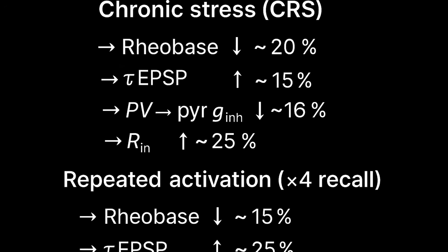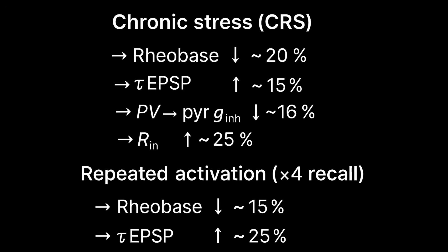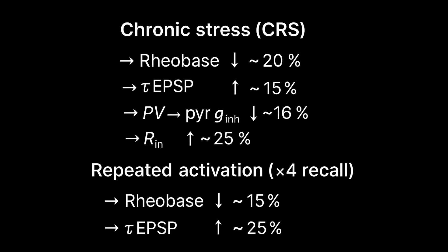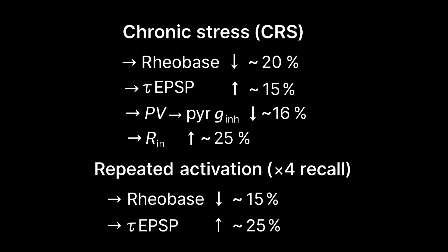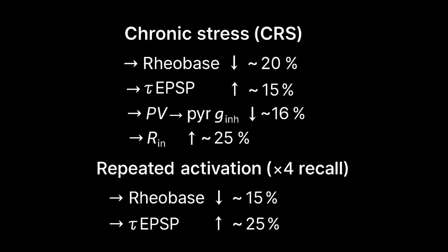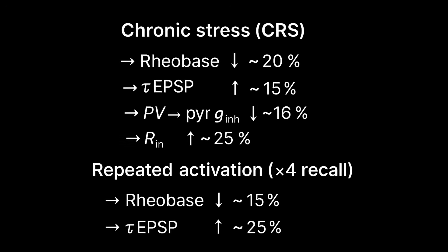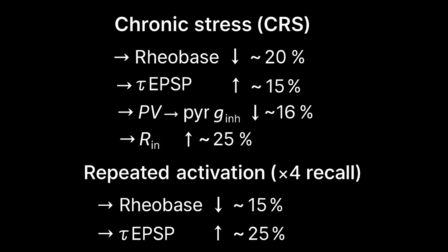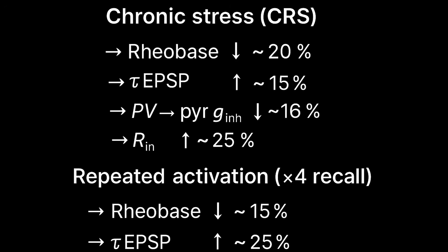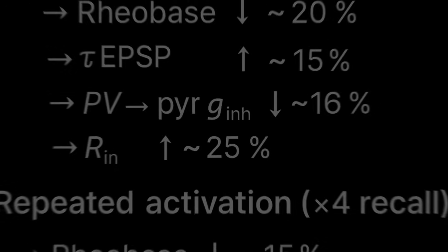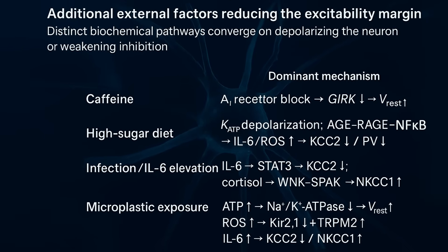Beyond the reduction of the excitability margin, chronic stress and repeated activation cause additional profound functional changes. In summary: rheobase reduction lowers the energetic activation threshold; input resistance amplifies the amplitude of EPSPs; the extended tau EPSP prolongs their temporal summation; and weakened PV inhibition makes inhibitory signals weaker and shorter.